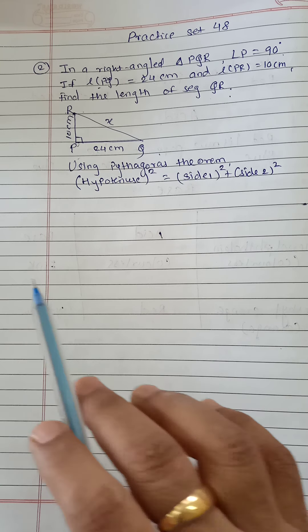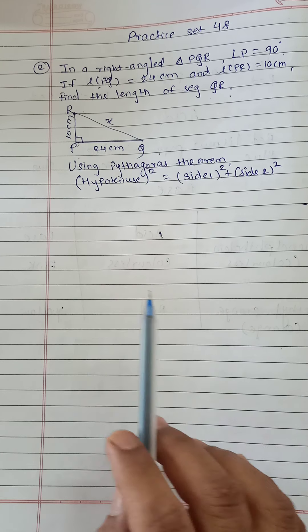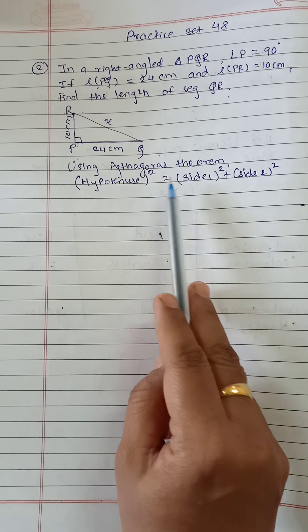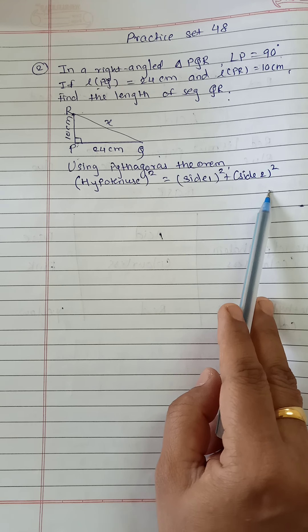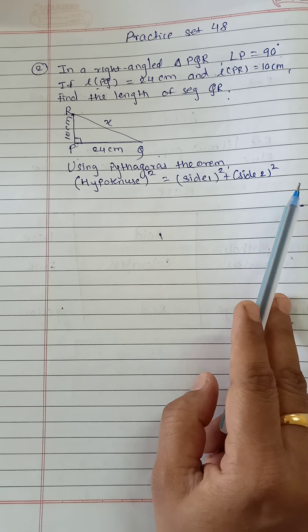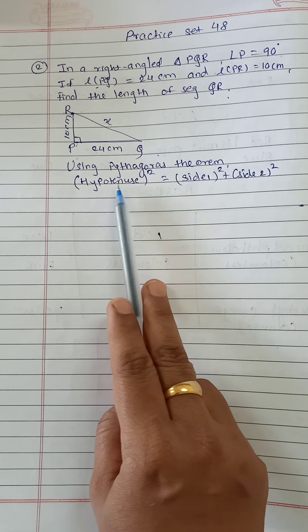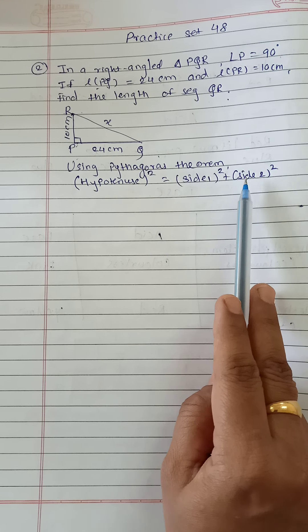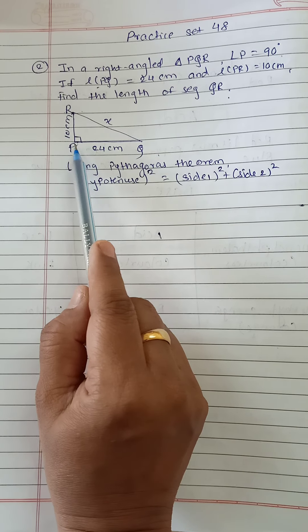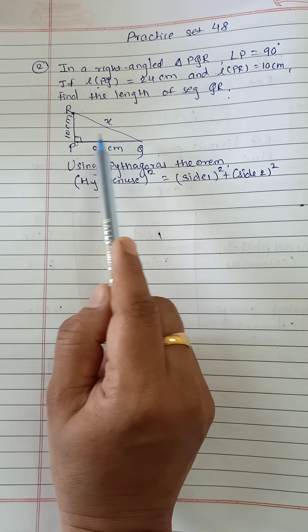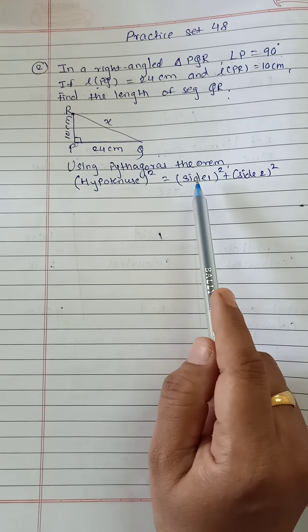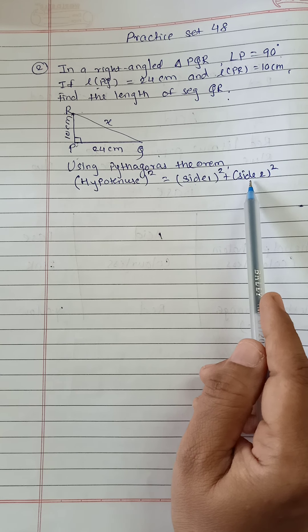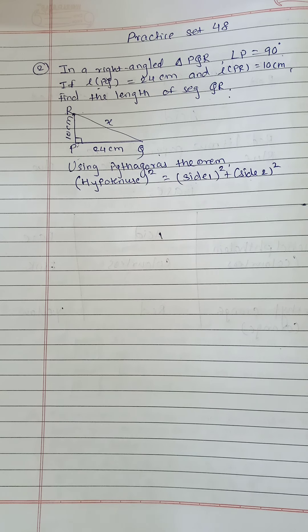Using Pythagoras theorem, we can write: hypotenuse square is equal to side 1 square plus side 2 square. Or we can write hypotenuse square equal to base square plus height square. This is the base and this is the height.